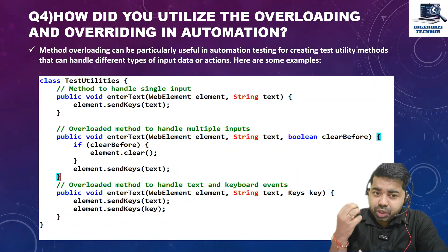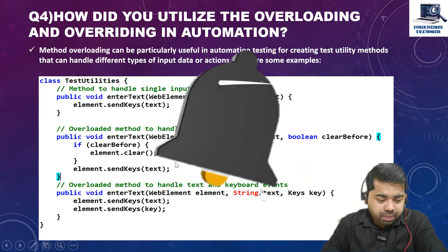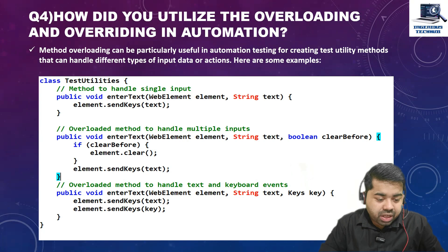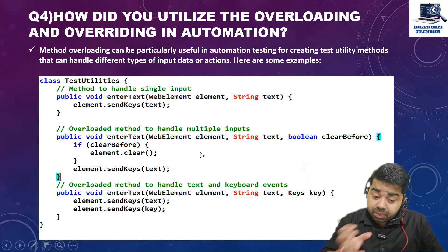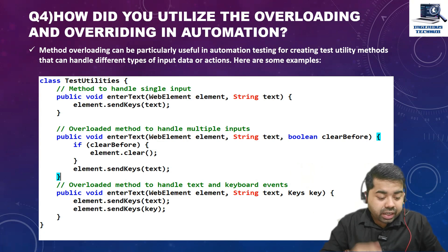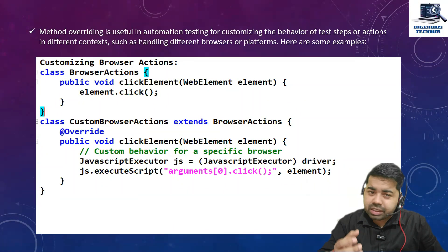When we are creating utility classes in your framework or automation, overloading means we have the same method name but pass different parameters. For example, in the interText method — we have one method passing a WebElement, another passing WebElement, text, and boolean, and another passing text and Keys to perform keyboard operations. This is a nice example of the overloading concept.